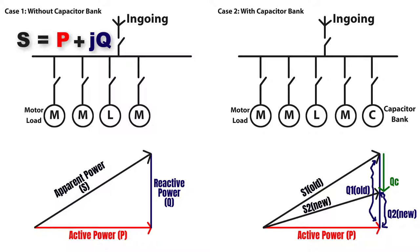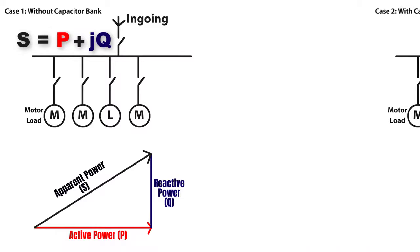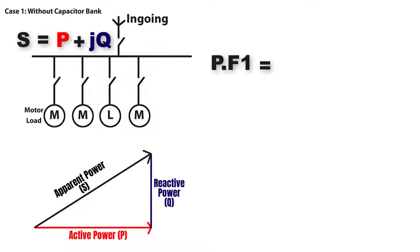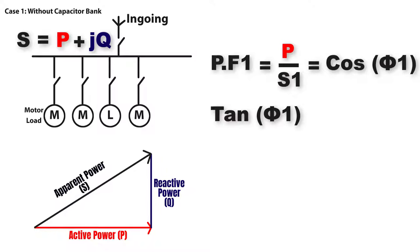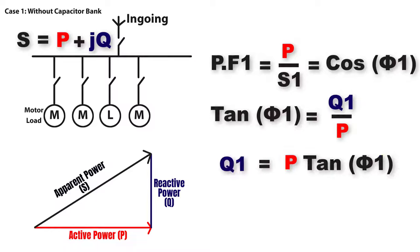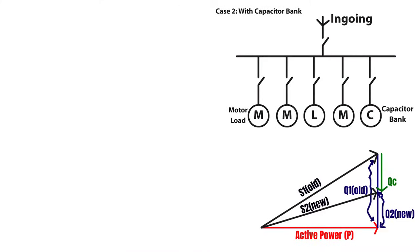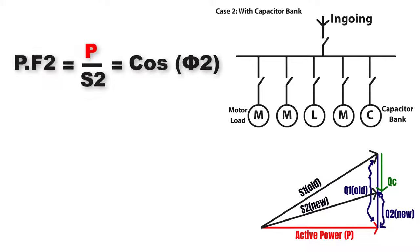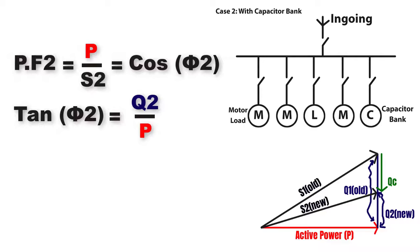Let's assume we have a system with no power factor correction and then connect it to a power factor correction system. Case 1 — before connecting the correction system: power factor 1 equals P over S1, which equals cosine phi 1, and tan phi 1 equals Q1 over P, so Q1 equals P times tan phi 1. Case 2 — after connecting the correction system: power factor 2 equals P over S2, which equals cosine phi 2, and tan phi 2 equals Q2 over P, so Q2 equals P times tan phi 2.